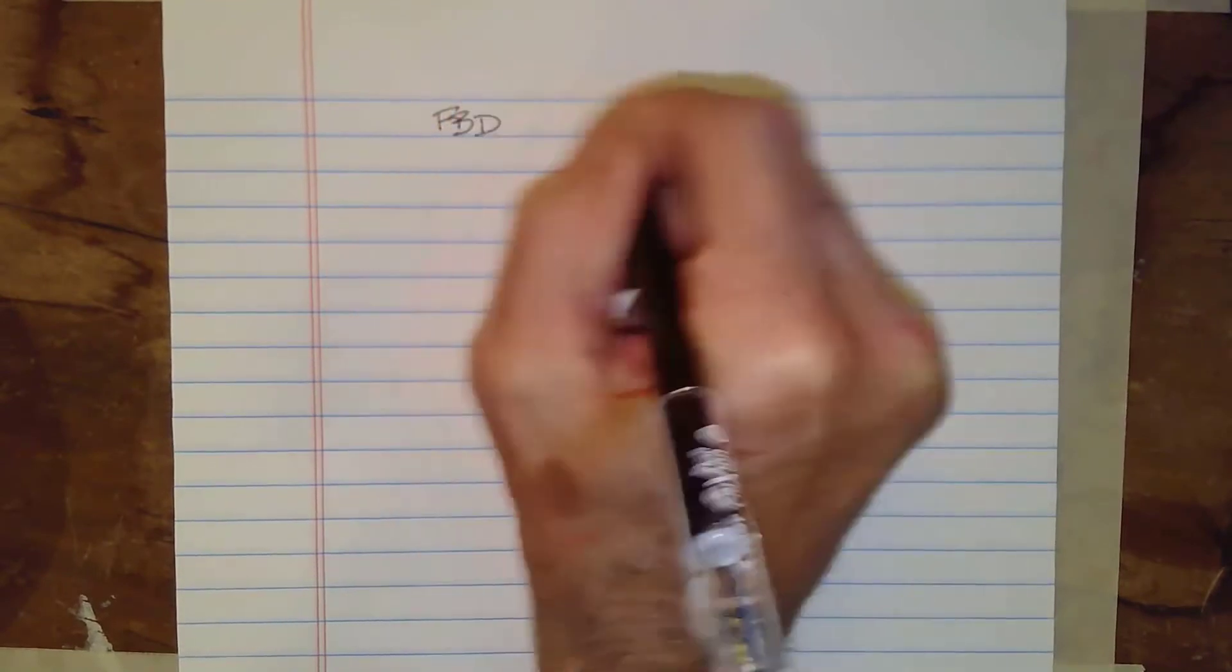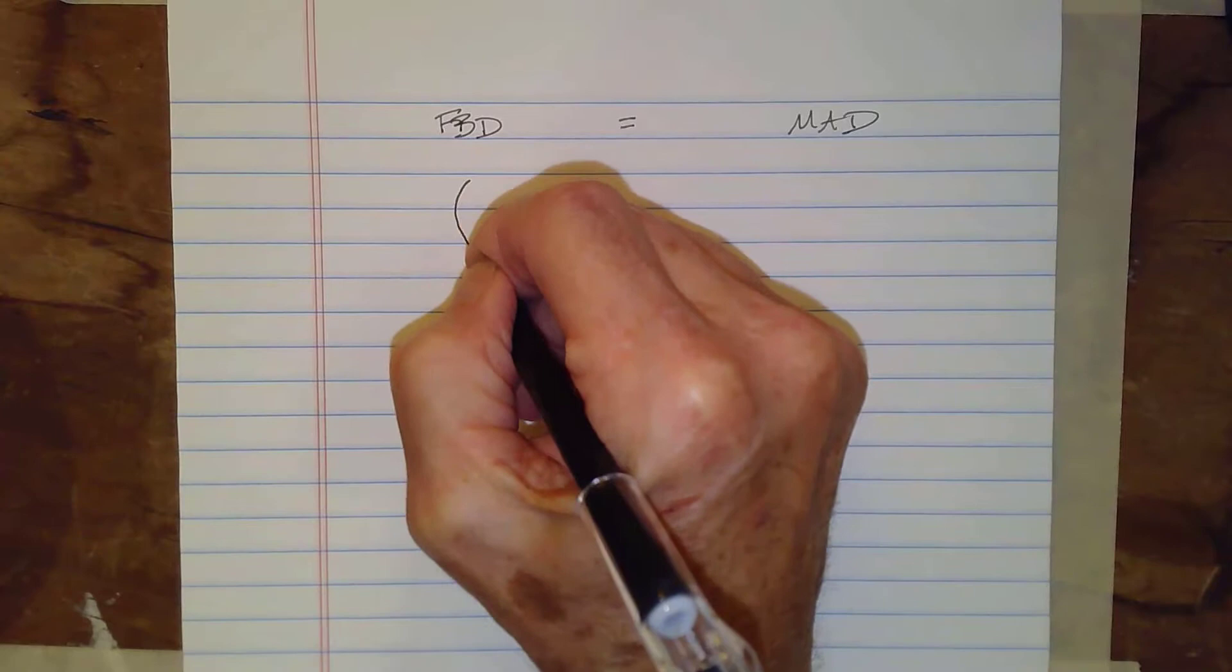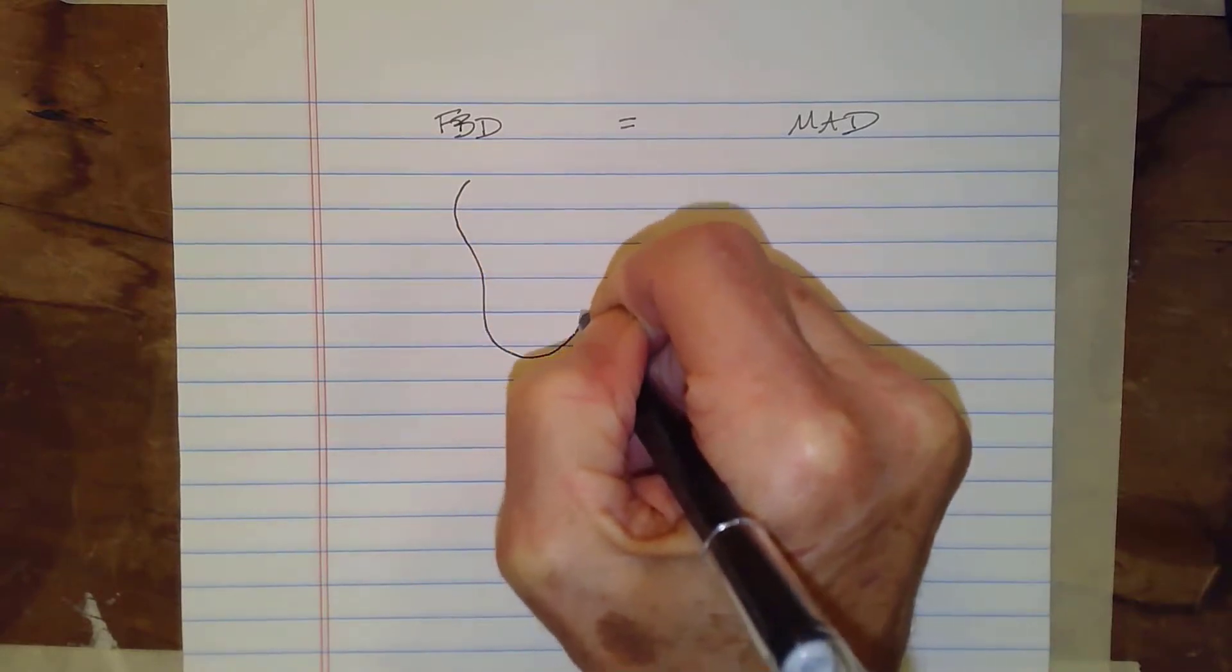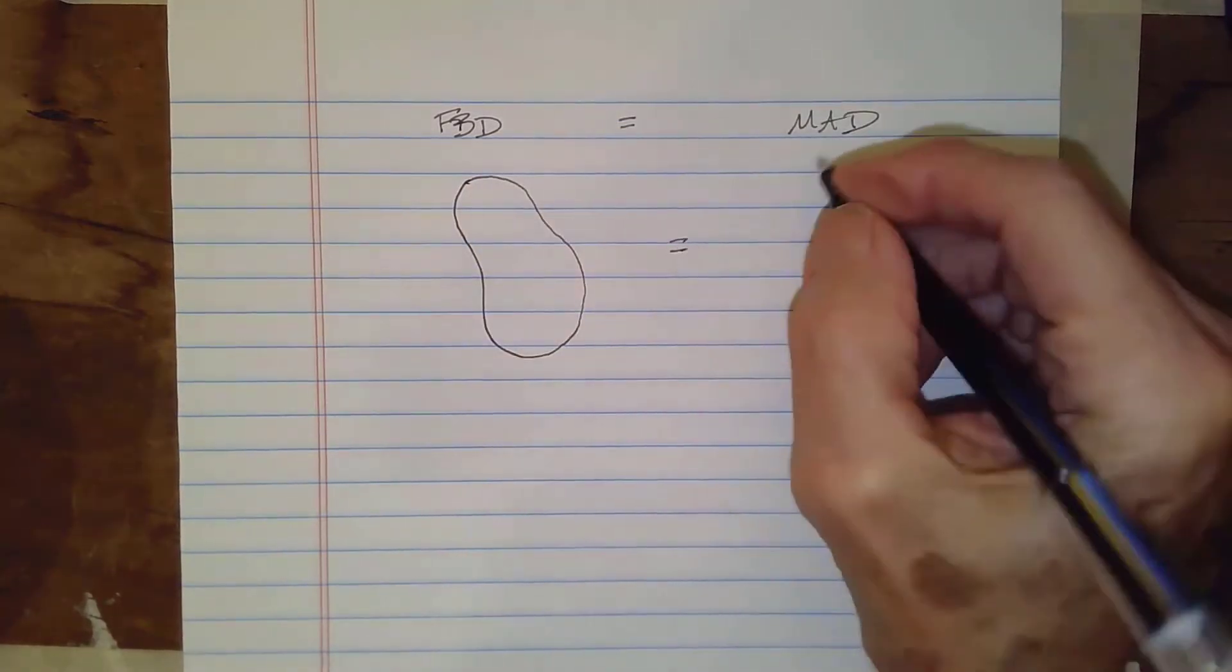Okay, so we're going to impose Newton's Second Law on a pendulum, but the pendulum itself is an oddly shaped object. So to impose Newton's Second Law, FBD equals MAD. Okay, and then our oddly shaped object, I'm just going to draw some weird shape. Okay, like so. And then we're going to draw it twice.